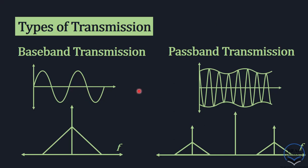You can see from the visual that in the case of baseband transmission, the signal is in its original form and has a frequency spectrum like this. This is just a hypothetical diagram — not the actual Fourier transform. In the case of baseband transmission, signals are transmitted in this raw form. In the time domain, the transmitted signal looks like this, and in the frequency domain, the transmitted signal looks like this.